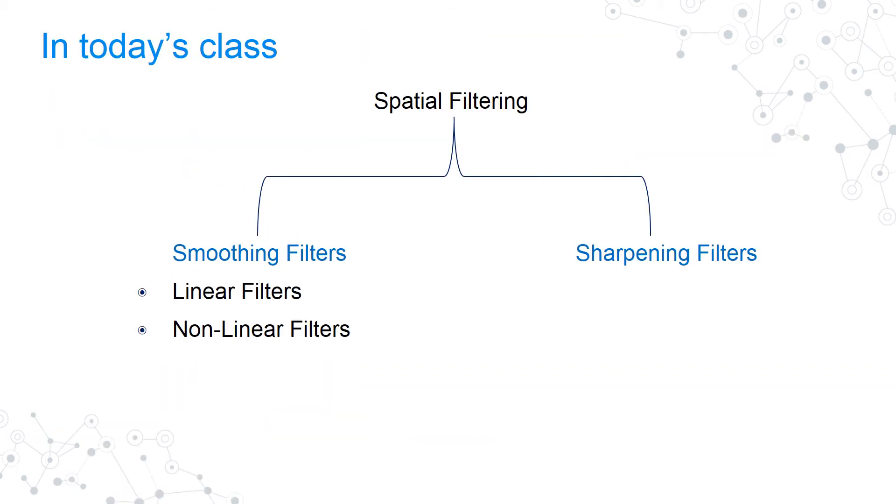We are going to study about spatial filtering wherein we would be studying about smoothing filters and sharpening filters. Smoothing basically is a sort of low pass filtering where it is going to blur your edges. And sharpening is going to do the inverse of it. So, my edges would be enhanced.